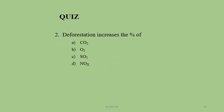MCQ: Deforestation increases the percentage of which gas? A) CO2, B) O2, C) SO2, D) NOx. Answer: A — CO2. Deforestation means cutting of trees, so consumption of CO2 decreases, meaning the percentage of CO2 increases in the atmosphere.